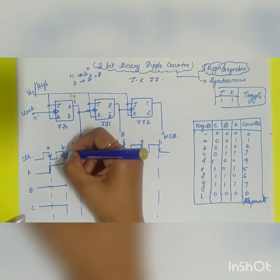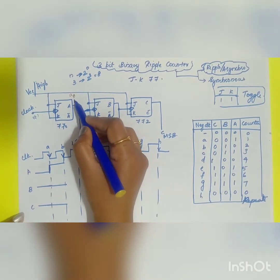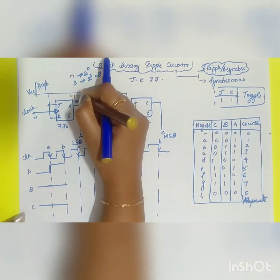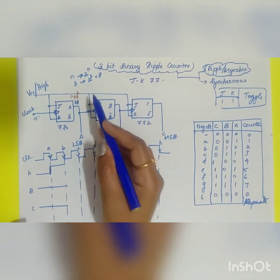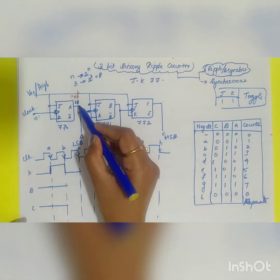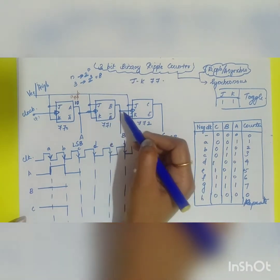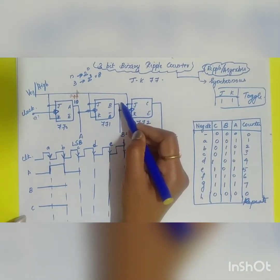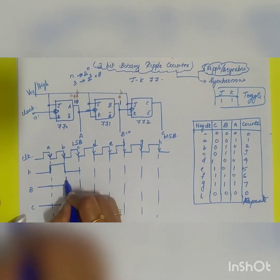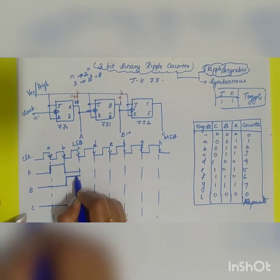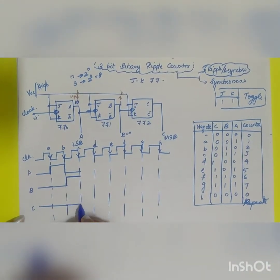During the next negative trigger (pulse B), flip-flop 0 toggles again from 1 to 0. Since A transitions from 1 to 0 (a negative edge), it triggers flip-flop 1. So B changes from 0 to 1. Since B is now 1 (positive transition), it does not trigger flip-flop 2, so C remains at 0.